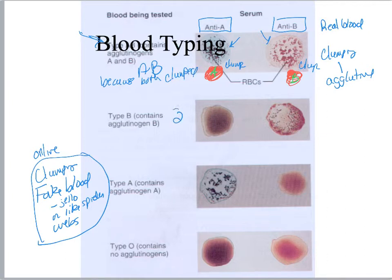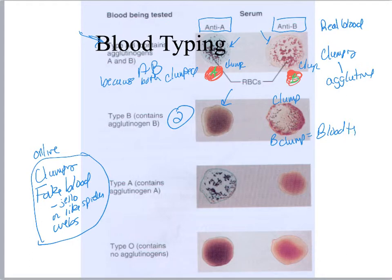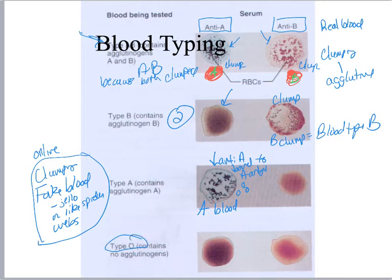Moving on: in example two, in the A puddle of blood there's no clumping, and in the B puddle there is clumping. Since only the B clumped, that equals blood type B. In another example, the anti-A bound to A antigens, therefore it is type A blood. And type O — another way to think of it as type zero — nothing clumps.